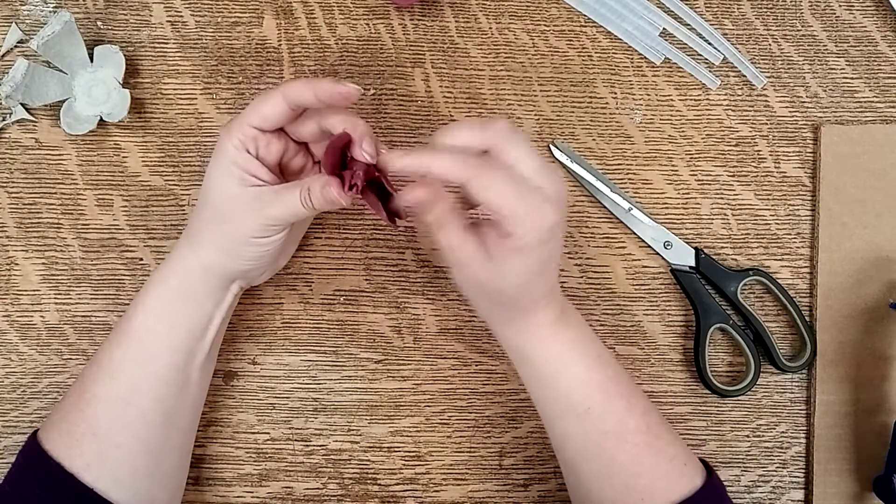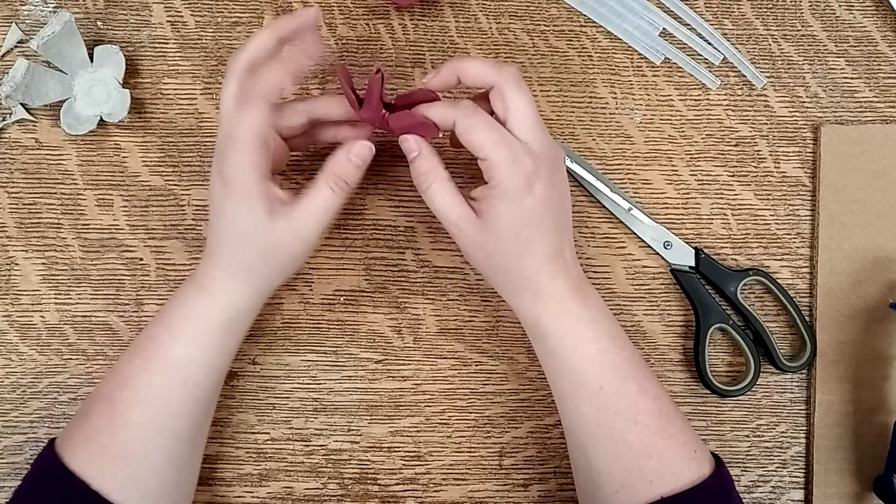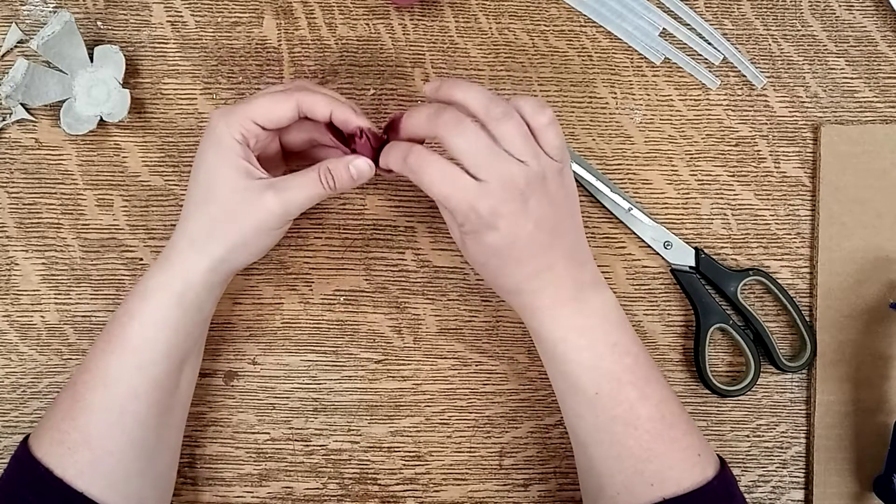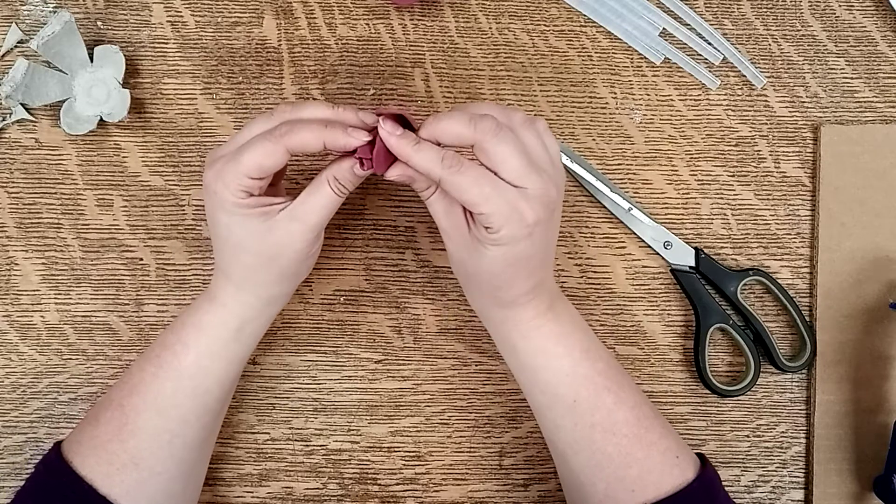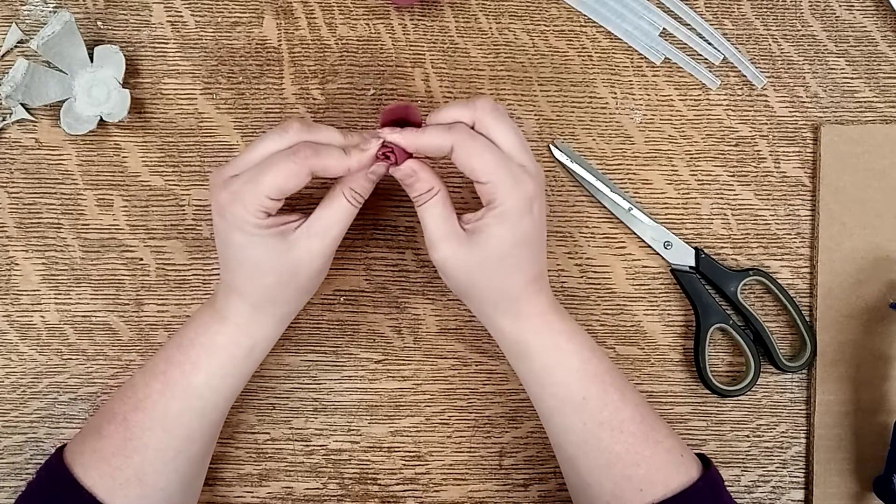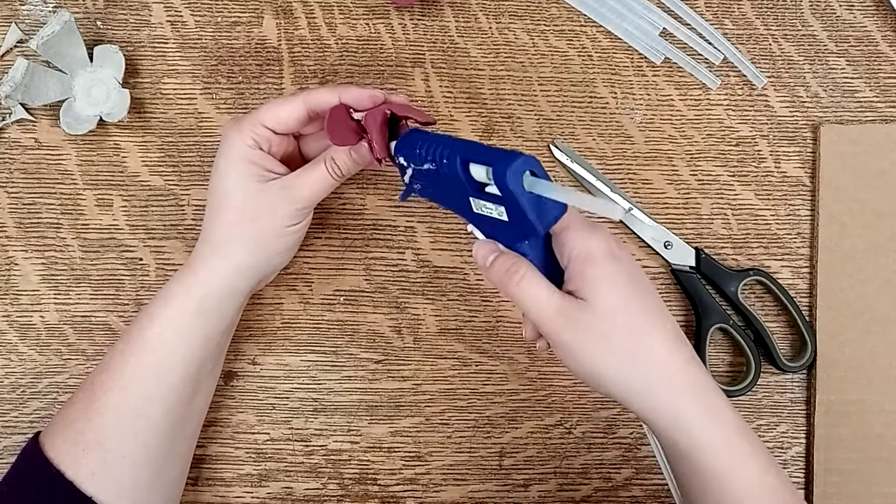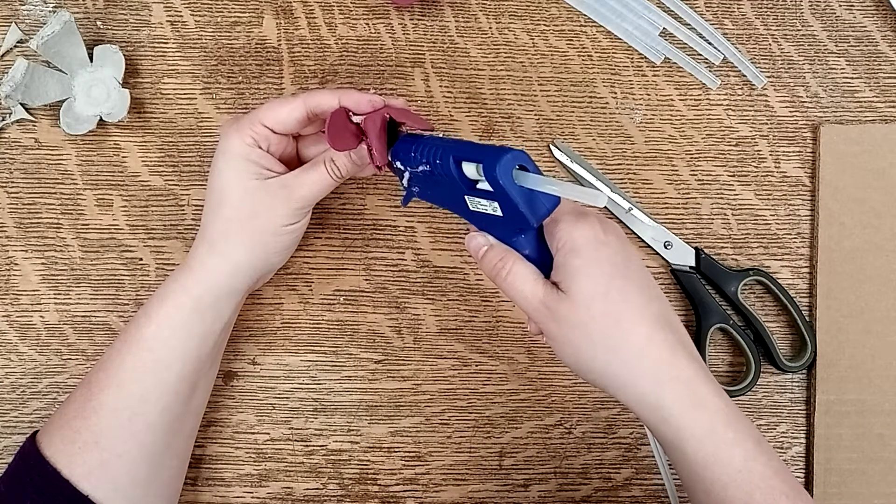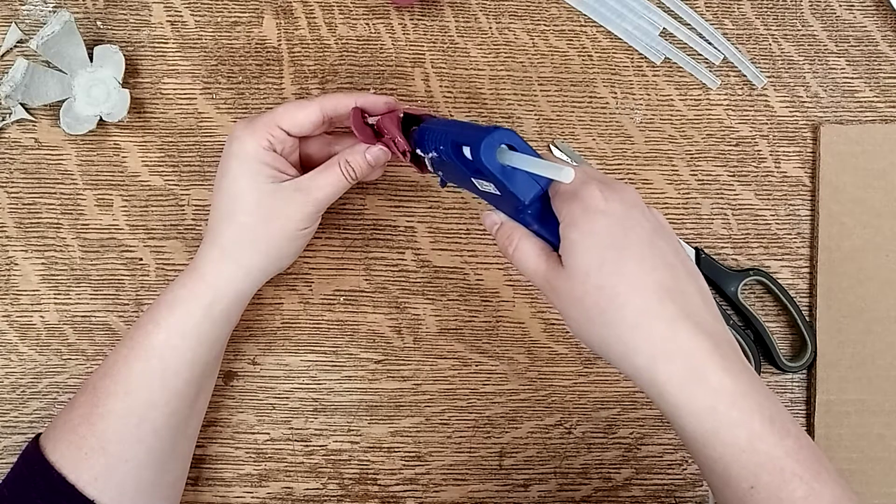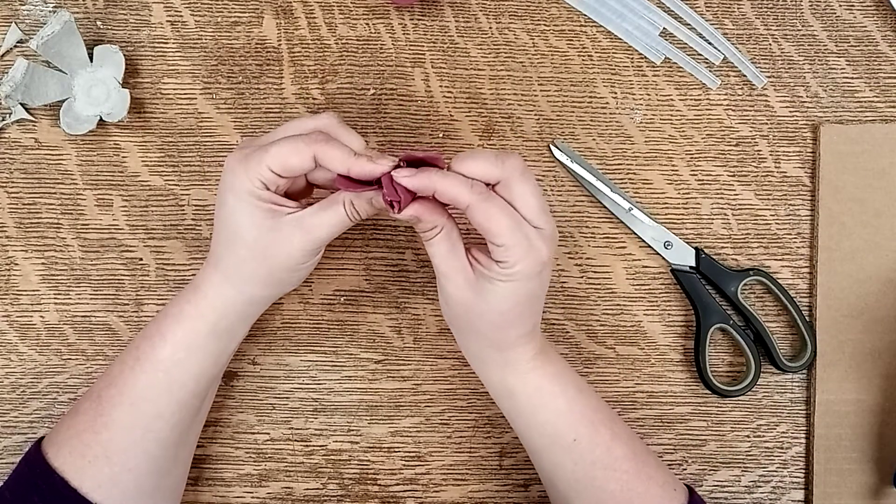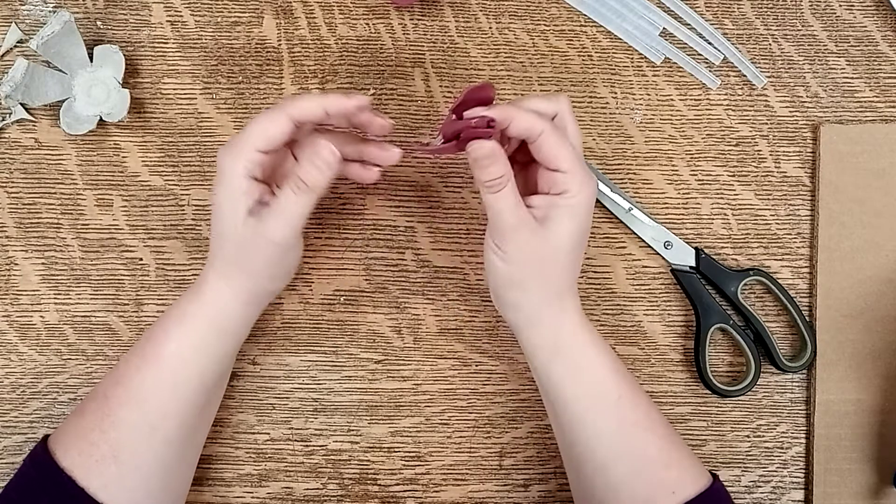So then you have the center bit of your rose. So then you take another one of these petals and it's alright too if it starts to rip a little bit because the glue will hold it in place. And then you want to wrap this petal around the outside here and then you put a bit of glue in here and here and wrap it around the center of your rosebud.